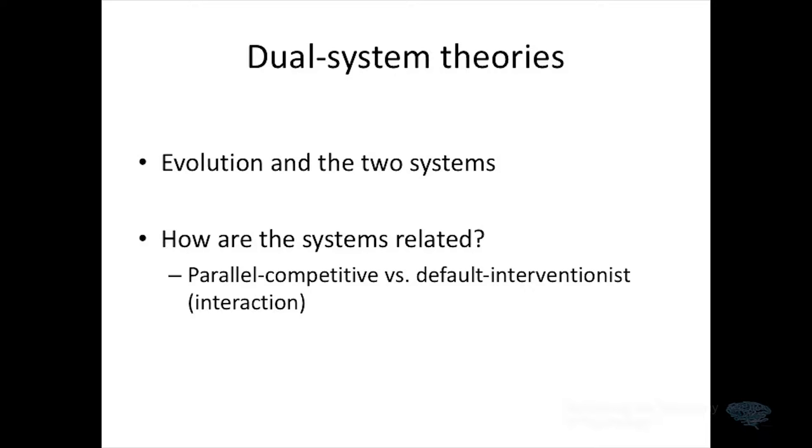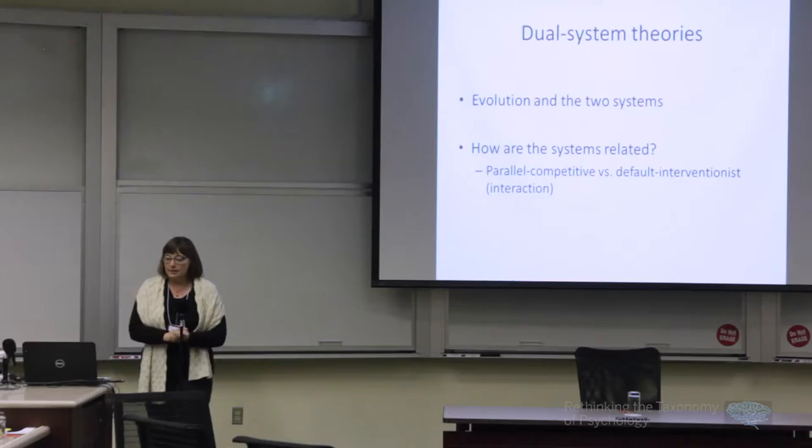Another question was how the systems are related. One possibility, consistent with the strong evolutionary claim, is that the systems function in parallel and they compete. There's certainly empirical evidence for two different response tendencies. More recently, people have moved to what they call a default interventionist or interactive approach, in which the systems can in some cases work together — with the competitive approach being experimentally useful but only capturing a minority of instances.